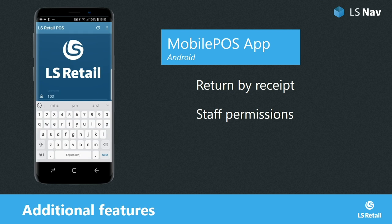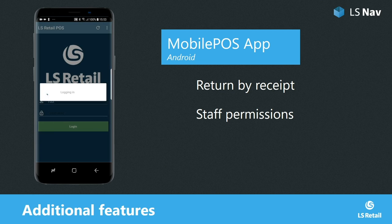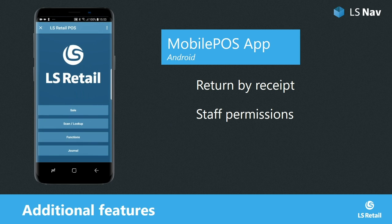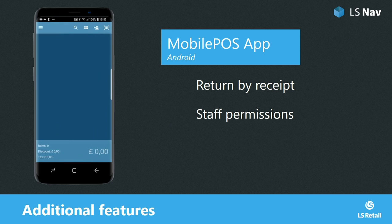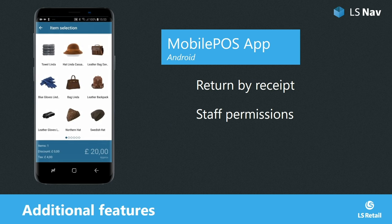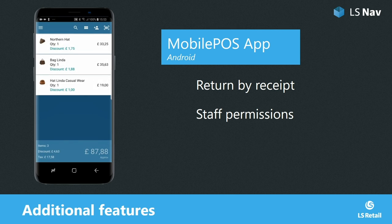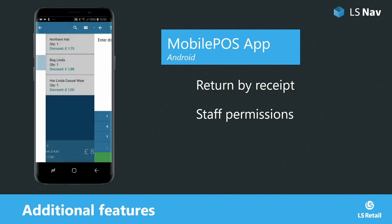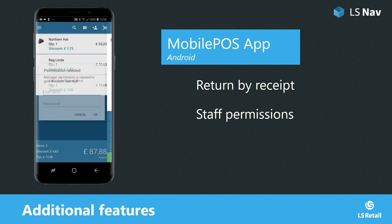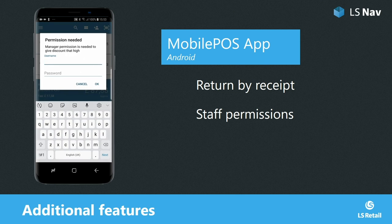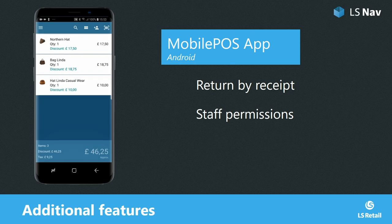Let's look at a short video. User 103 logs in and adds some items. They give a total discount of 5%, then change the discount to 50%. The system asks for manager authorization as the user is not allowed to give more than 10% discount. The 15% discount is applied to the transaction.